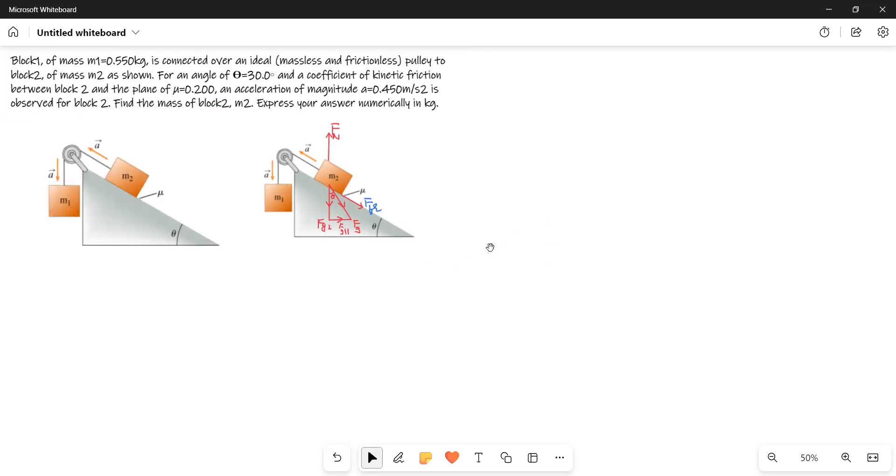Now, let us do the problem. Here, what is given to us? Mass M1 is given to us. Acceleration is given to us, and then mass M2 is on the inclined plane and it has some friction.